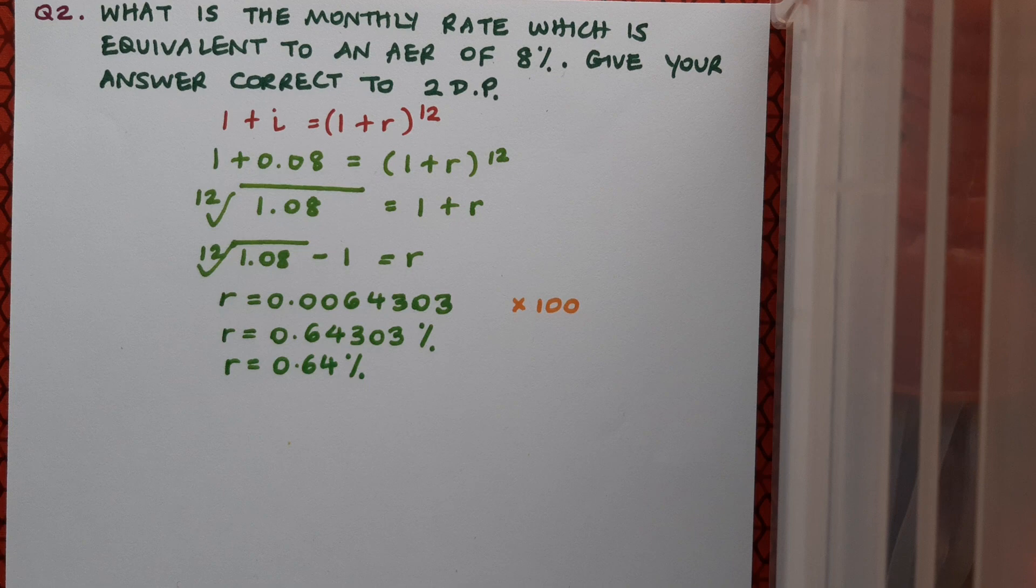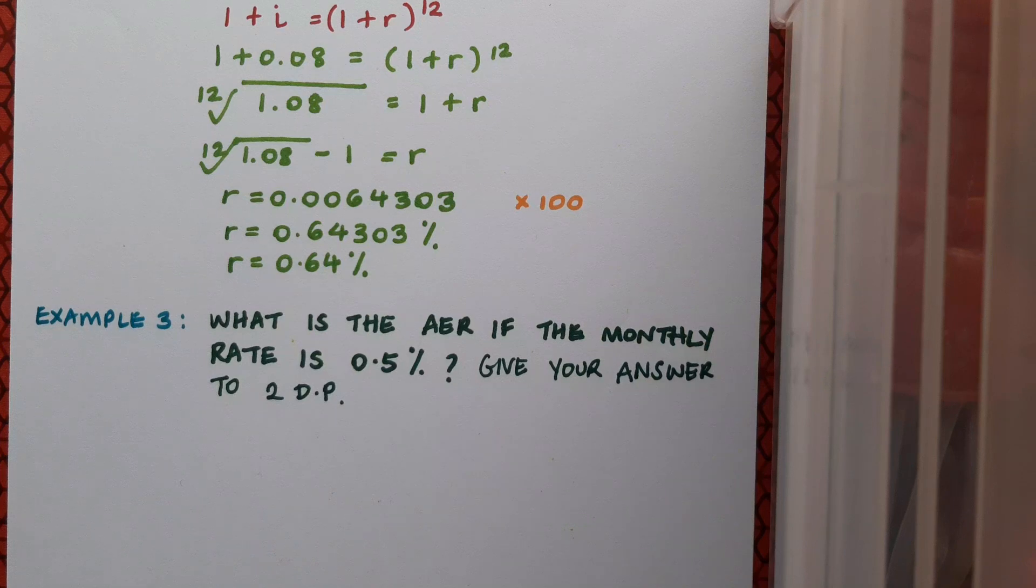Of course we can also go from knowing monthly rate to knowing the AER and that's a more straightforward process because we haven't got to root anything. Let's look at a quick example. What is the AER if the monthly rate is 0.5% and give your answer to two decimal places? Now you should be well able to do this so pause the video here and give it a shot and then see if your workings match mine.